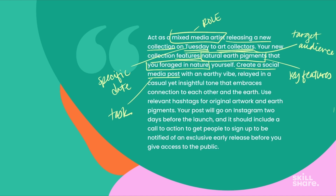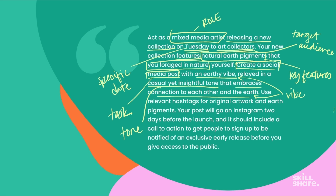The task here is to create a social media post, and I'm including 'with an earthy vibe' — that's saying what kind of vibe I want this to feel like — 'relayed in a casual yet insightful tone.' There's the tone. 'That embraces connection to each other and to the earth' — that gives specific context I want woven into this post. Then I specify to use relevant hashtags for original artwork and earth pigment. I'm not putting the hashtags in directly, but I'm giving keywords so that they get included.